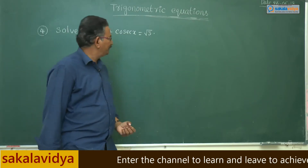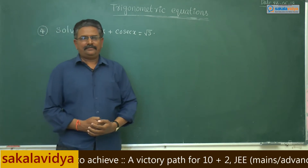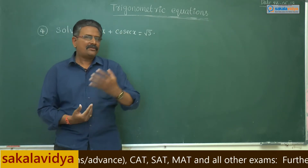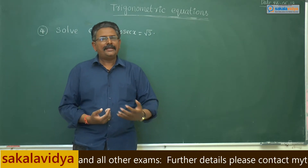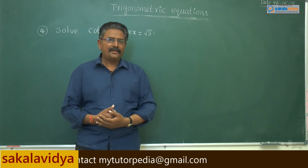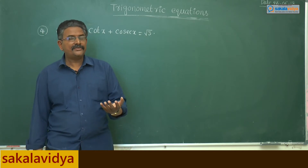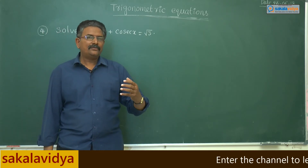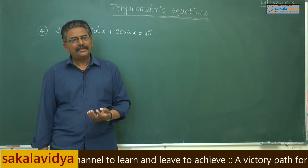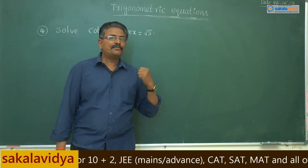Let us solve one more problem: cot x plus cosecant x is equal to root 3. So far we have solved problems in the form of a sin x plus b cos x equals c, or a cos x plus b sin x equals c. But the given problem is not in that form, so first of all we have to put it in the form of a sin x plus b cos x equals c. The same procedure that we have followed has to be followed for this problem also.